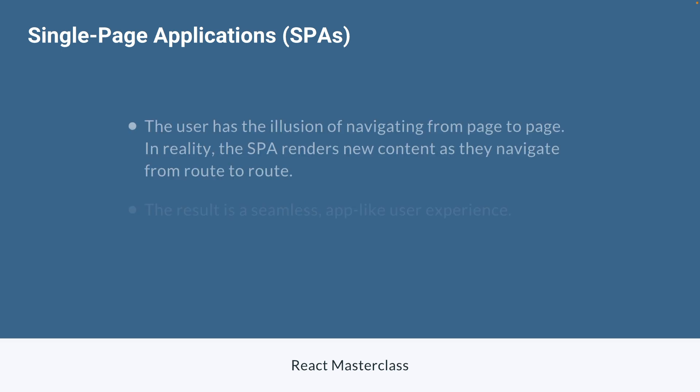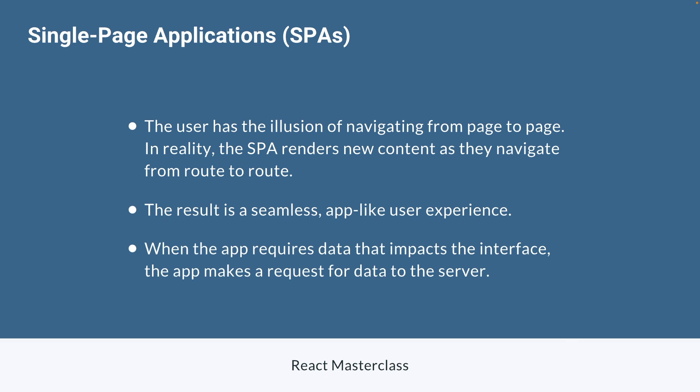You might ask: what about navigation? What if the user goes to a new route? Whenever we do that, we give the user the illusion of navigating from page to page, but in reality, the single page application simply renders new content as the user navigates from route to route. JavaScript can totally tear down the page you see on screen by removing all existing HTML elements and then painting a new picture on the DOM by adding new elements. Because all of this takes place on the front end without an additional request to a server, the result can be a seamless, more app-like user experience — the user only needs to wait for JavaScript to tear things down and build them back up again.